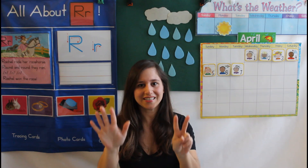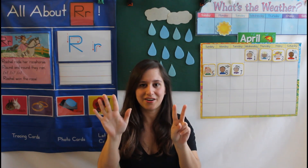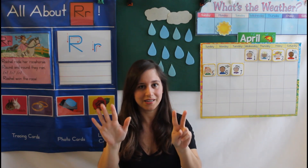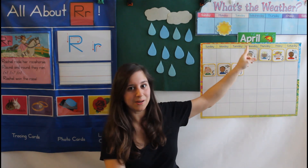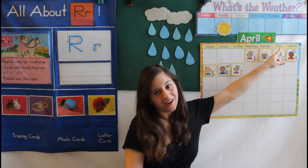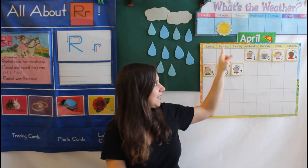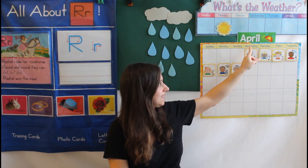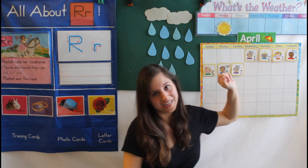There are seven days, there are seven days, there are seven days in the week. Sunday, Monday, Tuesday, Wednesday, Thursday, Friday, Saturday. Sunday, Monday, Tuesday, Wednesday, Thursday, Friday, Saturday.